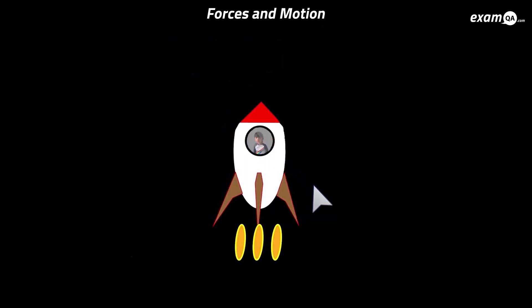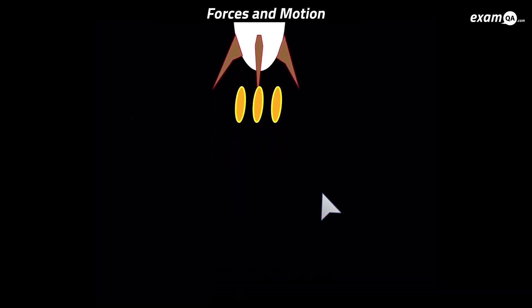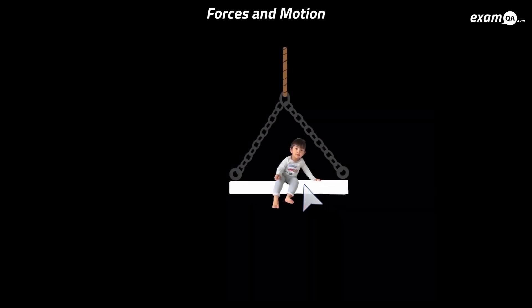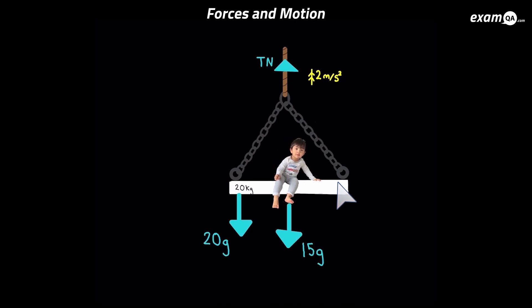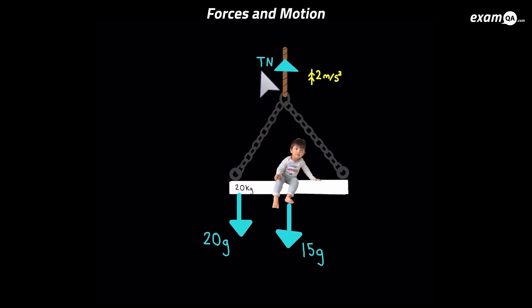And there we can see the rocket taking off — and he's gone! Now here's our second guest, my younger son, and he's on a lift. The mass of the lift is 20 kg, so the weight acting downwards is 20g. My son's mass is 15 kg, so his weight is 15g downwards. There is an unknown upward force T applied by a rope, and whenever a rope applies a force we call that tension.